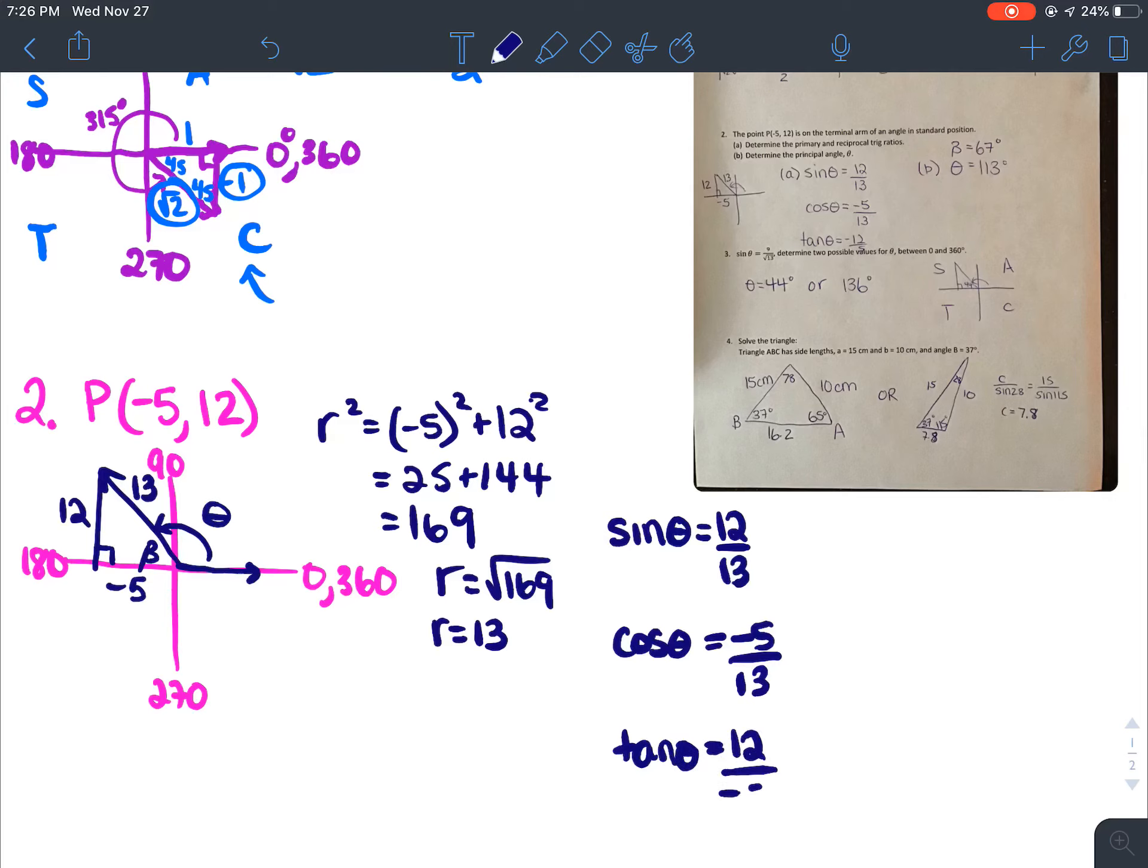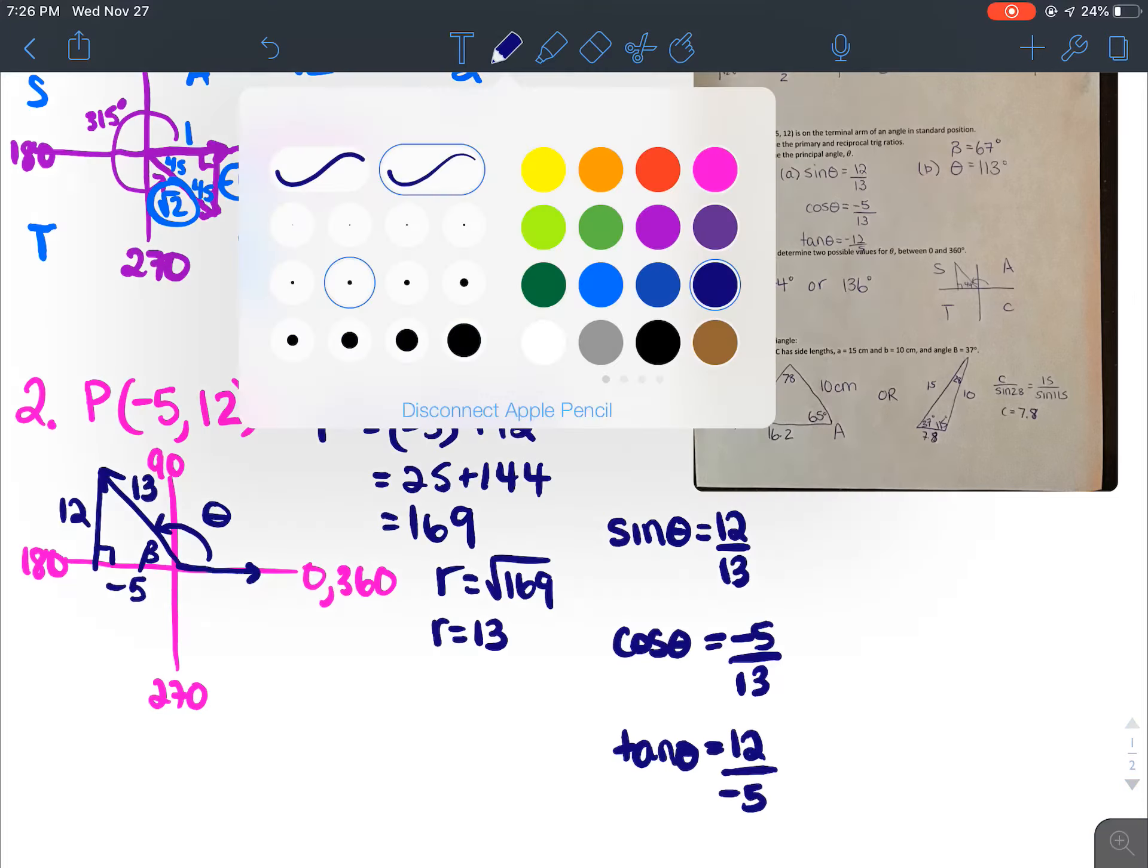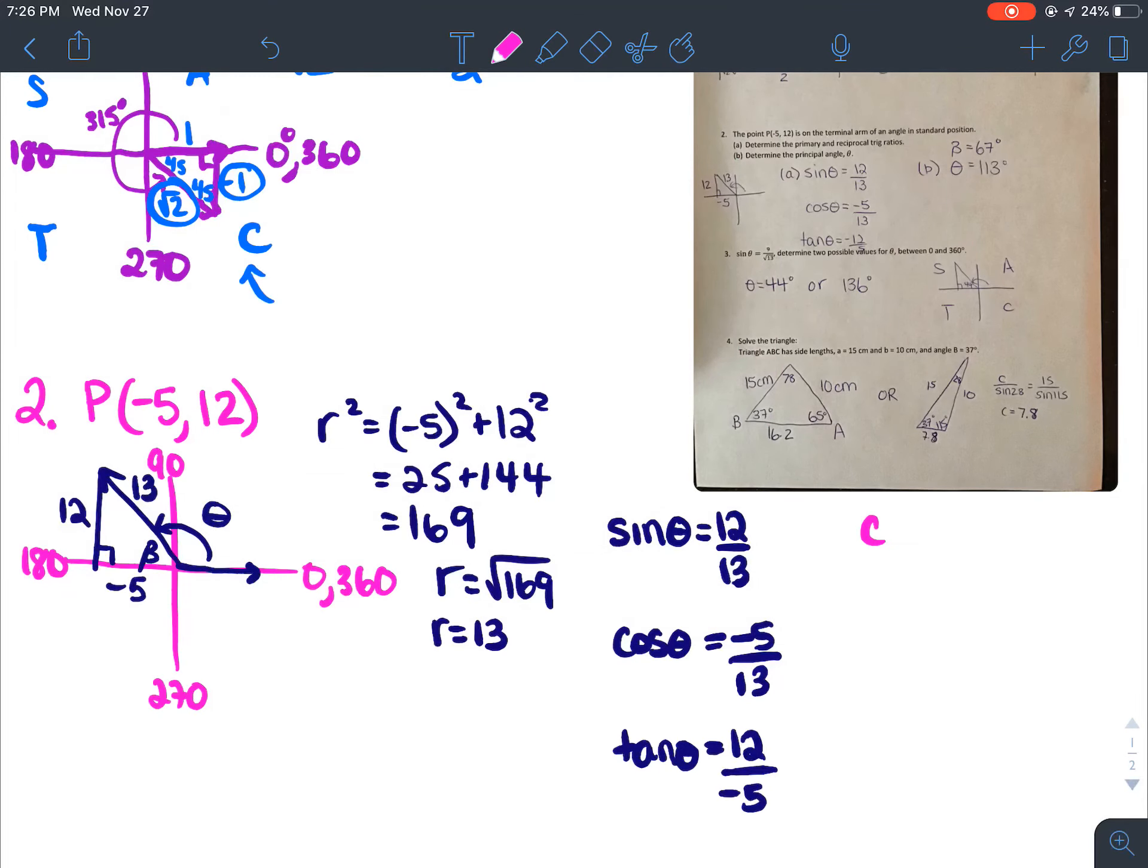And then your reciprocal ratios are just your cosecant, secant, and cotangent for all of our angles. And they're just the reciprocals, so that's going to be 13 over 12, 13 over negative 5, and then negative 5 over 12 for our reciprocal ratios.